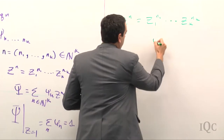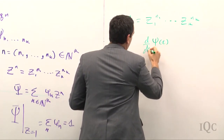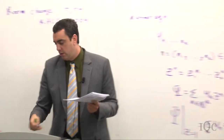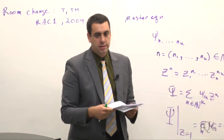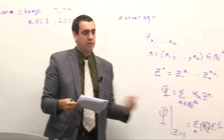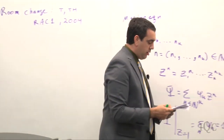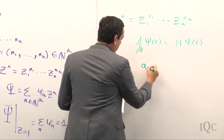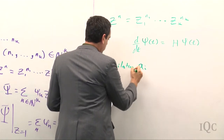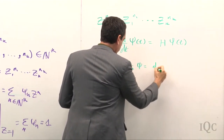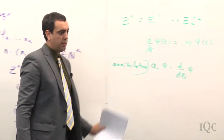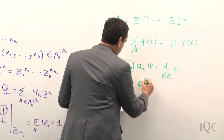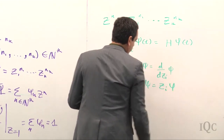Given some state ψ(t), how does it change with time? There's some operator H which tells us how it changes: dψ/dt = H ψ. The question is, what is H? That's the point of today. H is going to be built from creation and annihilation operators acting on these formal variables. The annihilation operator a_i is defined by taking a derivative with respect to z_i, and the creation operator a_i^+ is defined as multiplication by z_i.